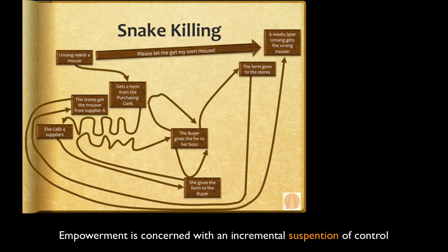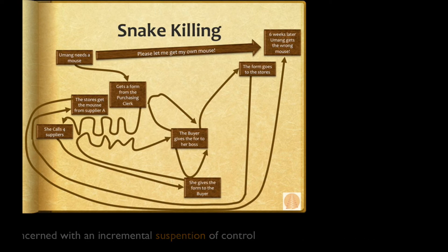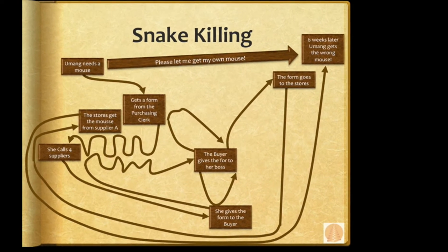If we went from the tortured route straight to what Umang really wants to do — get her own mouse — that wouldn't be an incremental suspension of control; that would be an absolute suspension of control. So if one wanted to suspend a process like this incrementally, one would do the following.